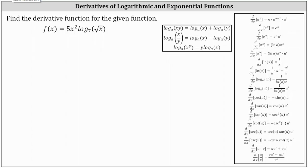We were given f of x equals five x squared times log base seven of the square root of x, and asked to find the derivative function. It'll be easier to find the derivative if we use the power property of logarithms to change the form of log base seven of the square root of x. Let's begin by writing the square root of x using the rational exponent of 1 half, so we can rewrite f of x as five x squared times log base seven of x to the power of 1 half.